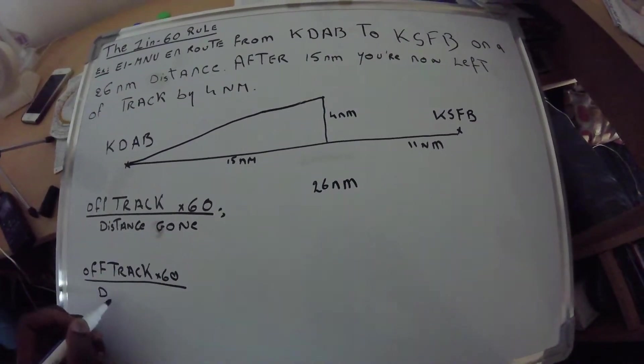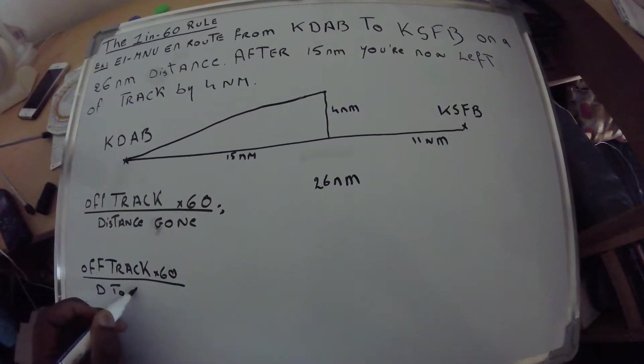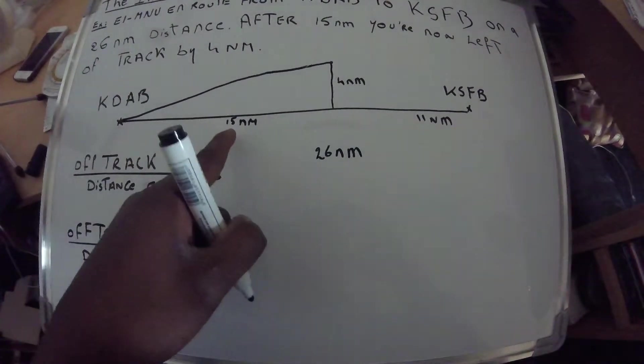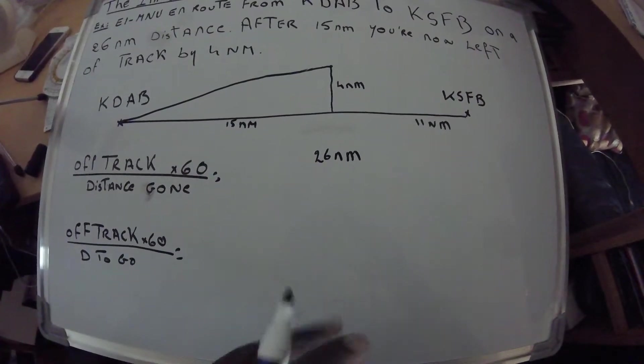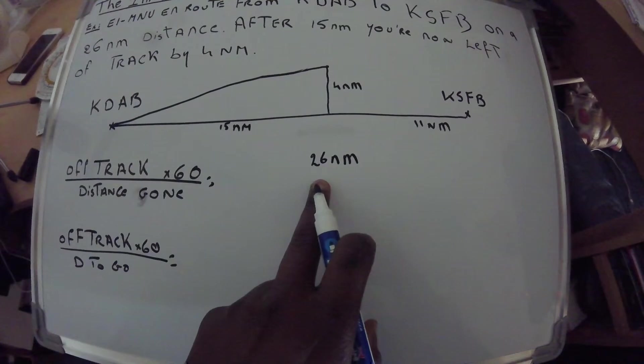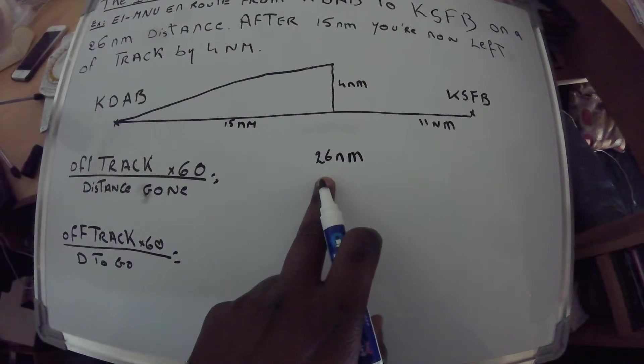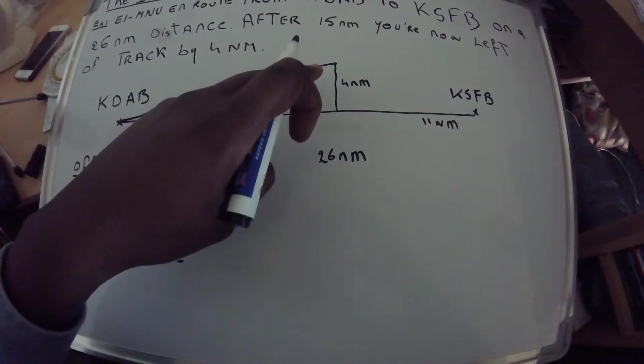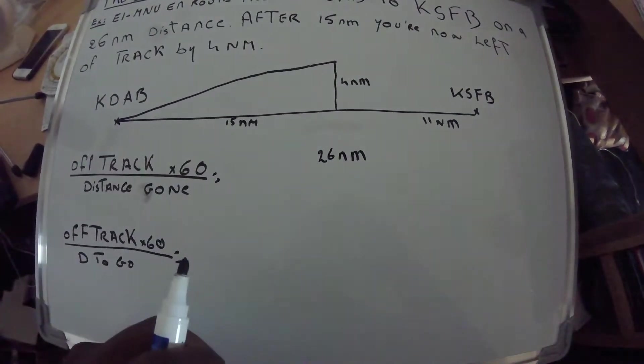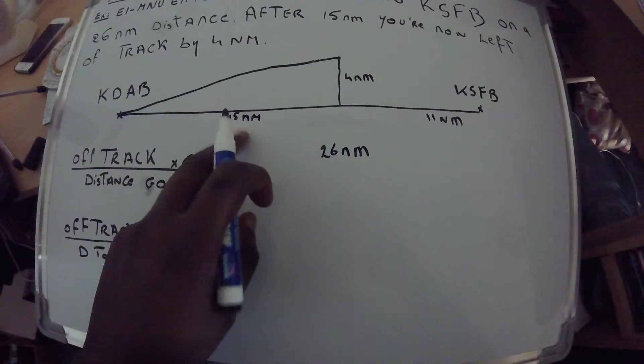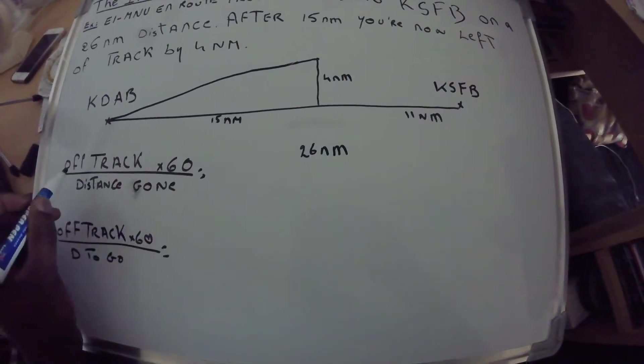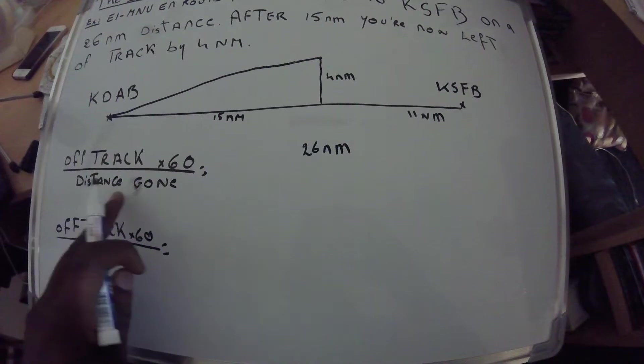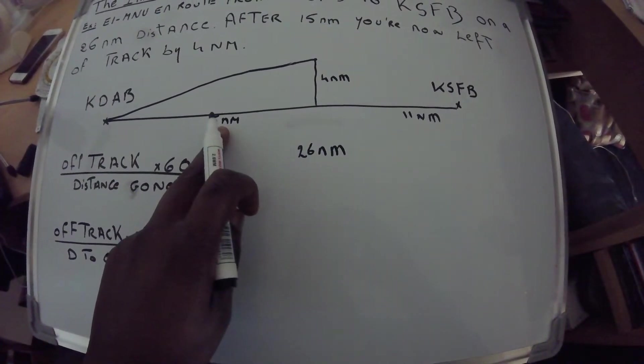The distance gone already is 15, and the total distance here is 26. We know that our guy is going to Sanford International Airport in Orlando and is now left of the track by 4 nautical miles. He already covered 15 nautical miles, so it would be off track 4 nautical miles multiplied by 60 divided by distance gone, which is 15 nautical miles.